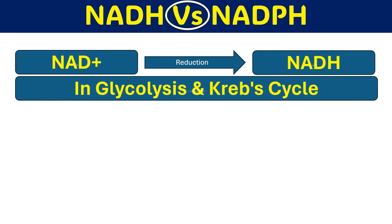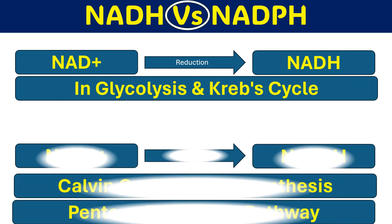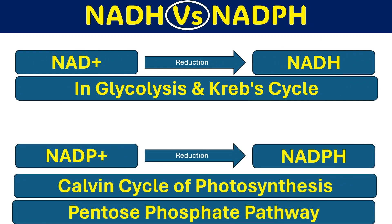NAD+, which is the oxidized form, is reduced by accepting two electrons and one proton, converting it to NADH. This happens during glycolysis and the Krebs cycle. Similarly, NADP+ is reduced to NADPH during the Calvin cycle of photosynthesis and the pentose phosphate pathway.